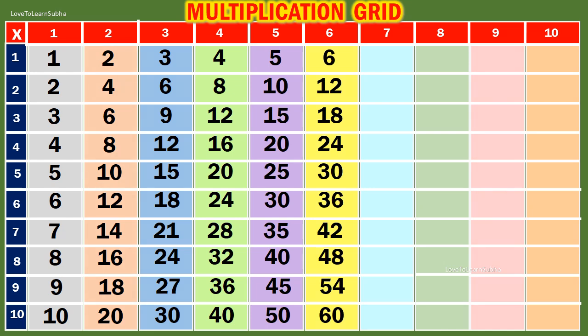Table of 7. 7 1s are 7. 7 2s are 40. 7 3s are 21. 7 4s are 28. 7 5s are 35.